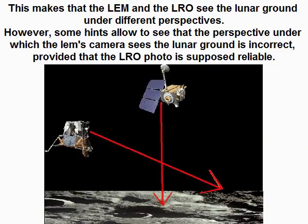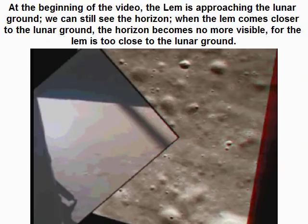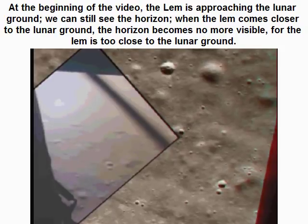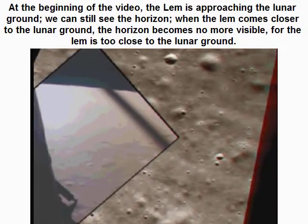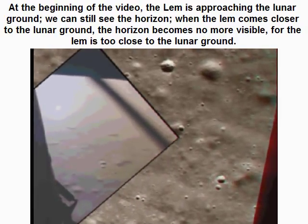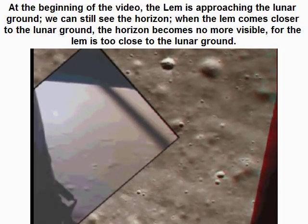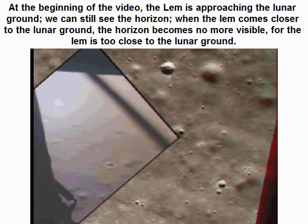This means that the LEM and the LRO see the lunar ground under different perspectives. However, some hints allowed us to see that the perspective under which the LEM's camera sees the lunar ground is incorrect, provided that the LRO photo is considered reliable. At the beginning of the video, the LEM is approaching the lunar ground and we can still see the horizon. When the LEM comes closer, the horizon becomes no longer visible because the LEM is too close to the lunar ground.